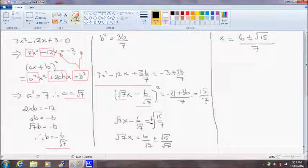So our solution is x is equal to, our possible solutions are x equals to positive 6 plus root 15 on 7. I'm just going to leave it in exact form.